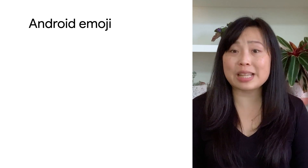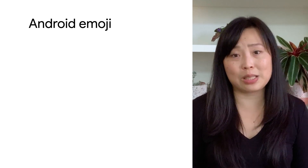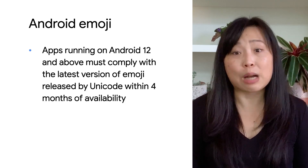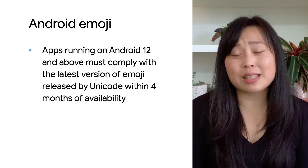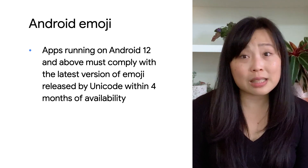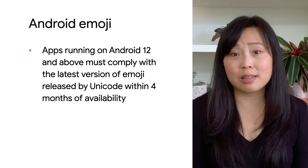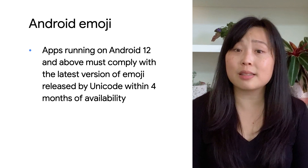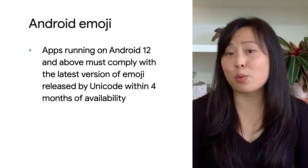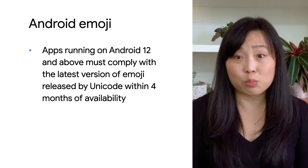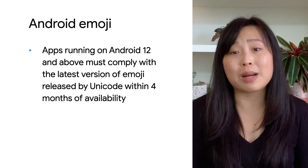Next, we're launching a new Android emoji policy to give users an inclusive and consistent user experience across the Google platform. When the Unicode for an app is outdated, users often don't see the new emojis as intended. Instead, they may see small square boxes or an incorrect set of emojis. As you can expect, this can be a frustrating or confusing experience. So we're adding a policy that requires apps running on Android 12 and above to use the latest version of emojis released by Unicode within four months of when it's available.